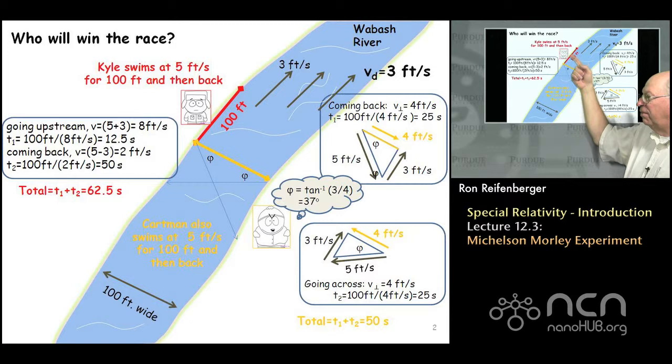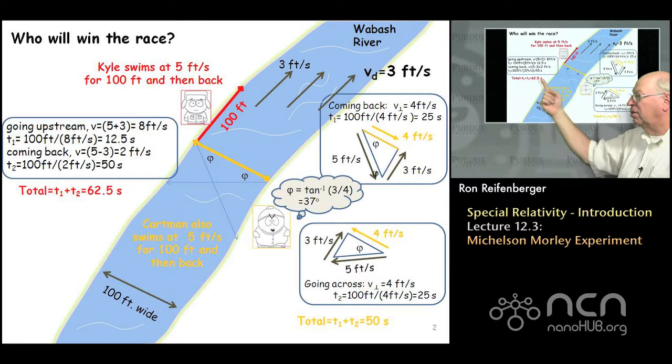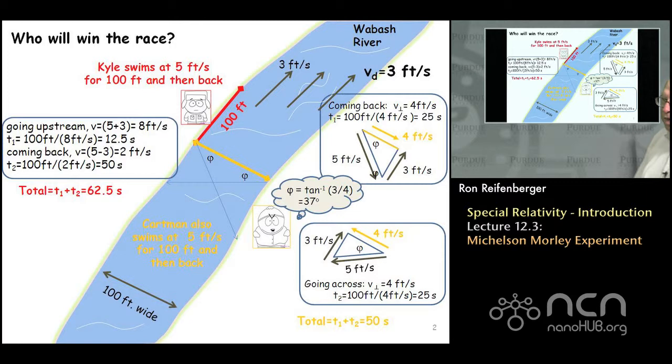On the return trip, his constant 5 foot per second swimming speed is going to be counteracted by the 3 feet per second drift velocity of the river. So his net velocity coming back is only going to be 2 feet per second, requiring 50 seconds to cover the 100 feet. So his total transit time is going to be about 62 and a half seconds.